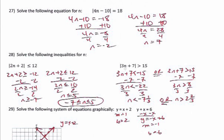Number 27 covers absolute value equations. Absolute value means the distance from zero, so there are two cases: the expression equals positive 18 or negative 18. For the negative 18 case, solving gives n equals negative 2. For the positive 18 case, solving the two-step equation gives n equals 7. This equation has two answers: negative 2 and 7. Absolute value equations for linear cases will typically have two answers.